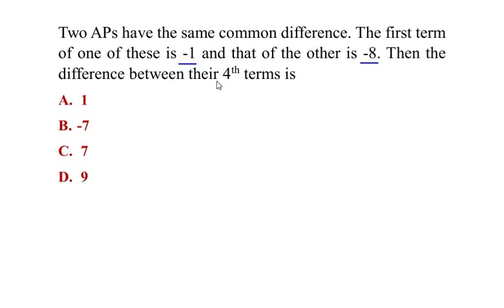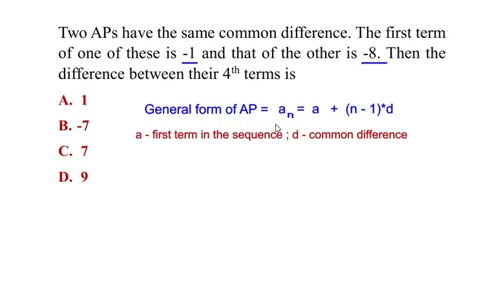Let us start by writing the general form of the arithmetic progression. It is given as a_n is equal to a plus n minus 1 times d, where a represents the first term of the sequence and d stands for the common difference.